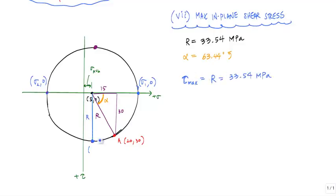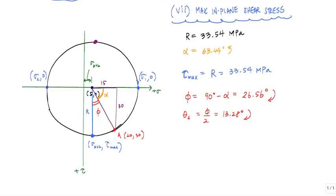The coordinates at this point are sigma average comma tau max. The angle associated with this maximum in-plane shear stress state is this angle, which I will call phi. Phi equals 90 degrees minus alpha, which is 26.56 degrees. From zero degrees, this is going clockwise. That means theta s, or the angle in the plane stress element associated with my maximum in-plane shear stress state, equals phi divided by 2, which would be 13.28 degrees, again going clockwise.